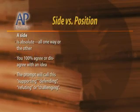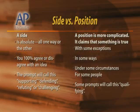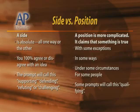Once you have listed the ideas, it's time to think about your thesis statement. A thesis statement is a one-sentence summary of your opinion — it's the focus of the essay. Thesis statements come in two broad types: sides and positions. A side is absolute — you 100% agree or disagree with an idea. The prompt will refer to this as supporting, defending, refuting, or challenging. A position is more complicated: it claims that something is true in some ways, under some circumstances, for some people, or with some exceptions. This is referred to as qualifying. Generally speaking, a position is more sophisticated than a side. Upper level essays — seven or above — tend to take a position.